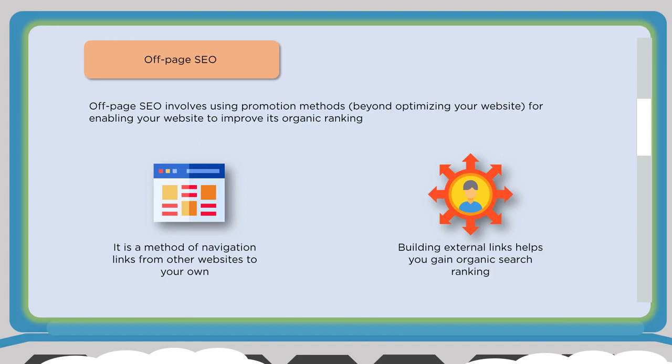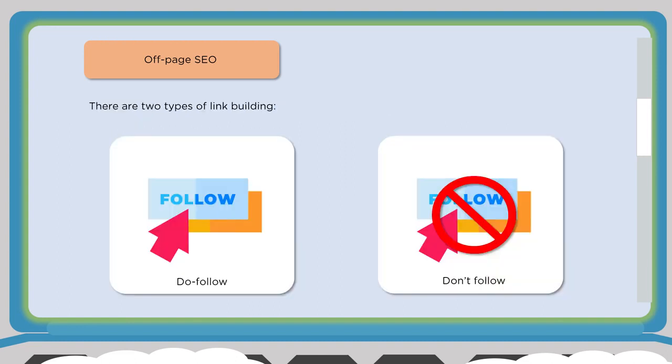We want to establish links from other websites to our own — or references to our website — to help gain in rankings. There are lots of ways to do that: social media, social content sites like Reddit, Medium, Quora, and blogging. You need to make sure they're quality, relevant sites. When you get an external link pointing back to yours, you want to make sure it's a do-follow link so that Google knows to follow that link from that site to yours.